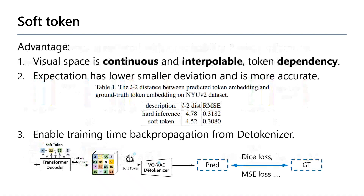There are three benefits of using the soft token. First, the visual space is inherently continuous and interpolable, and the tokens learned by VQVAE are not completely independent of each other. Second, the soft weighted token can have lower distance to the ground truth token, and experiments on depth estimation in table 1 verified this. Third, soft token can enable gradient backpropagation through the VQVAE detokenizer, which introduces an auxiliary loss between prediction and ground truth directly.